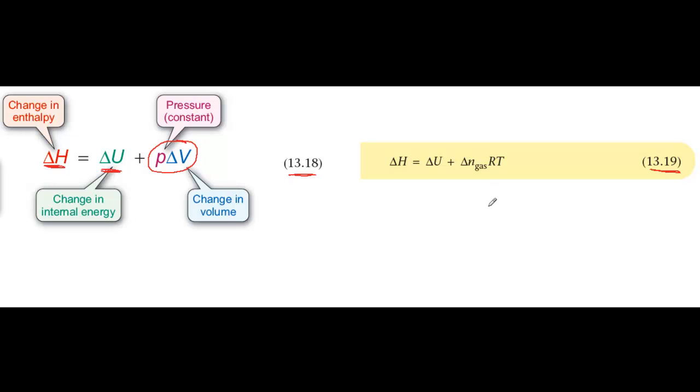Equation 13.19 is a different form of 13.18, and here the expansion work is taken care of by the term delta N gas RT, where delta N gas is the number of moles of gas in the products minus the number of moles of gas in the reactants.